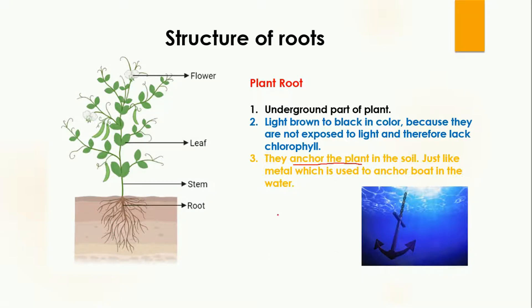The main function of the root is that they anchor the plant in the soil, just like a metal anchor used to keep a boat or ship in the water so it is not drifted away. Similarly, the roots work just like an anchor, keeping the plant in one place and not allowing it to drift away — for example, during heavy rain or wind, which could take the plant away from the soil.